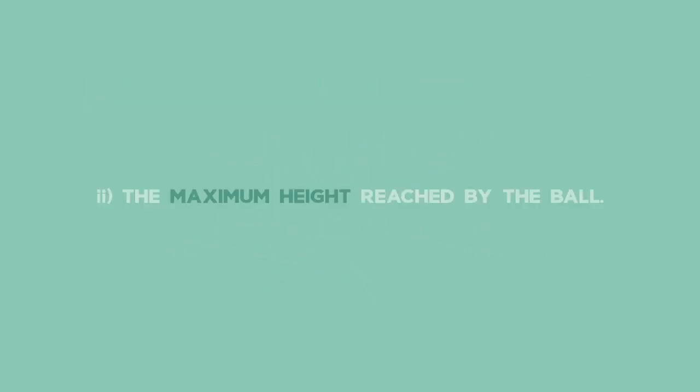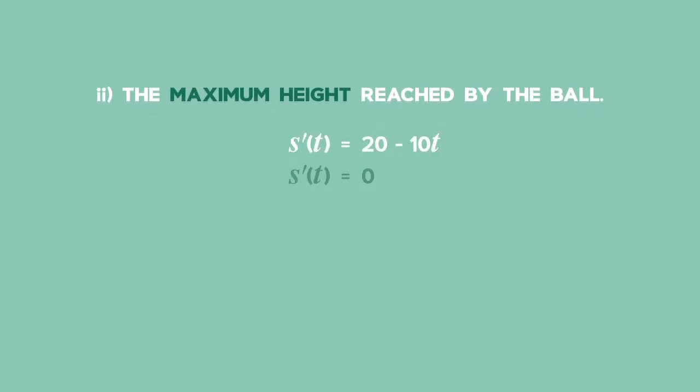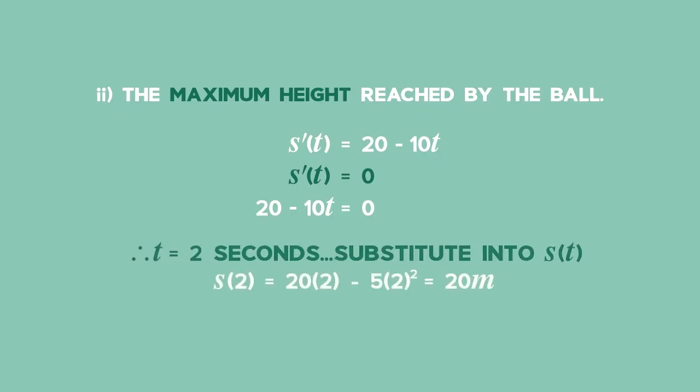2) To find the maximum height reached by the ball, set the derivative equal to 0. 20 minus 10t equals 0. Therefore, t equals 2 seconds.